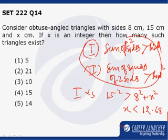But for the triangle to exist, x has to be greater than 7 also, because if x is equal to 7 then the triangle will not exist.